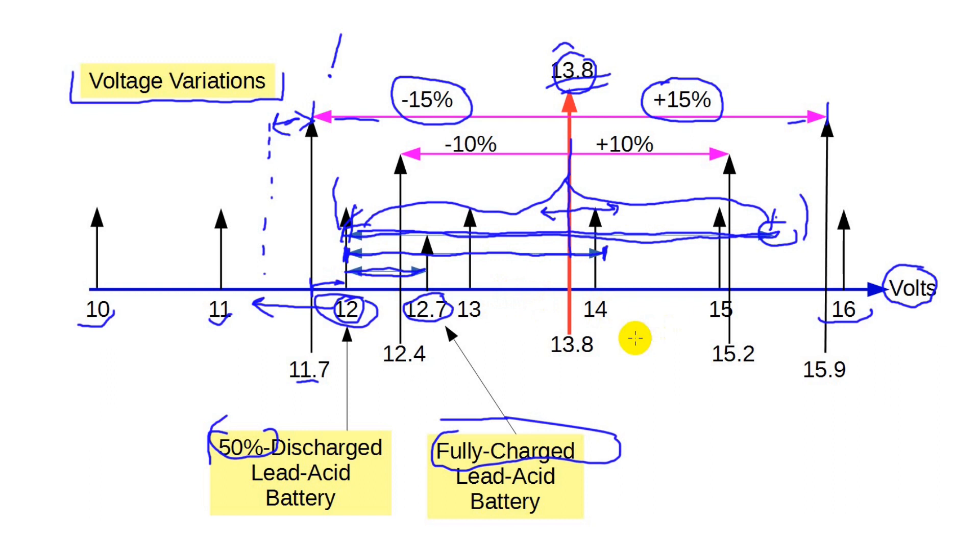Now, let's look at my Yaesu FTDX 3000. Its spec is 13.8 volts plus or minus 10 percent. Clearly, it's not designed for an automotive environment. The low end of the spec is 12.4 volts, which makes battery use problematic. But with a plug-in power supply, it's fine. Even with the voltage drop I just demonstrated, it's fine.